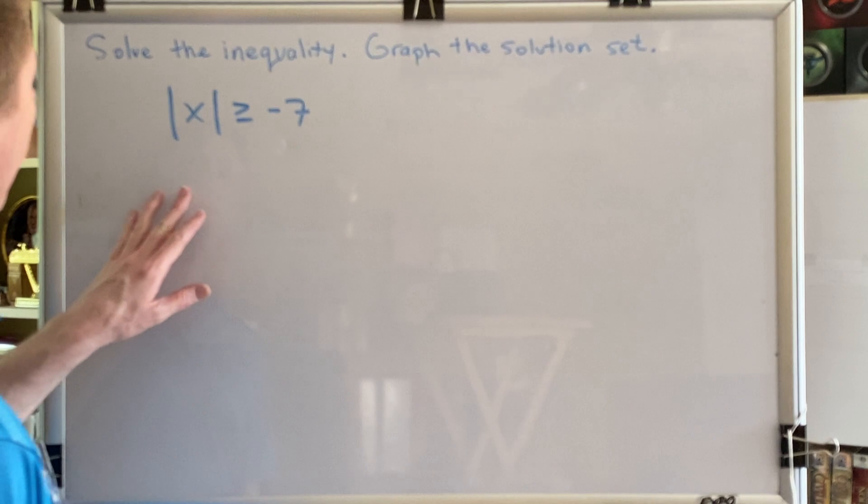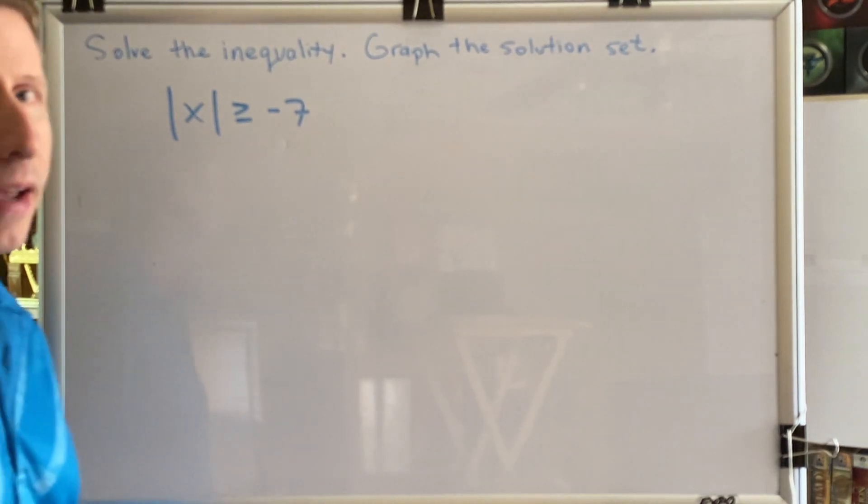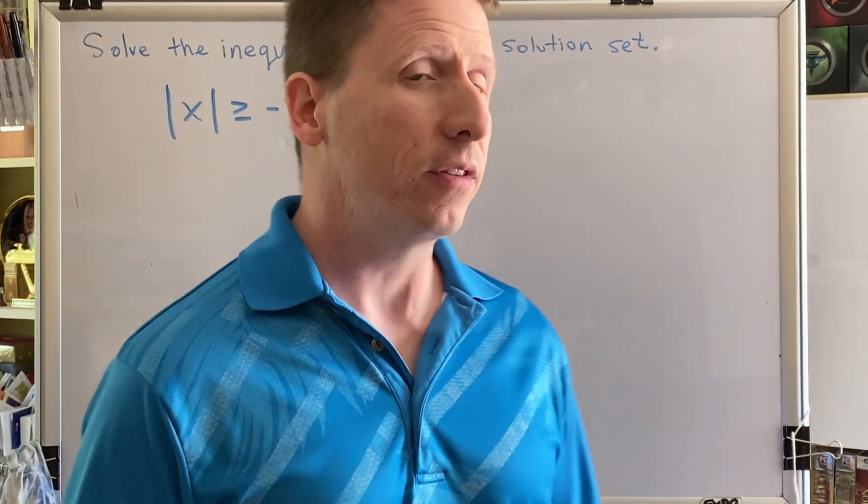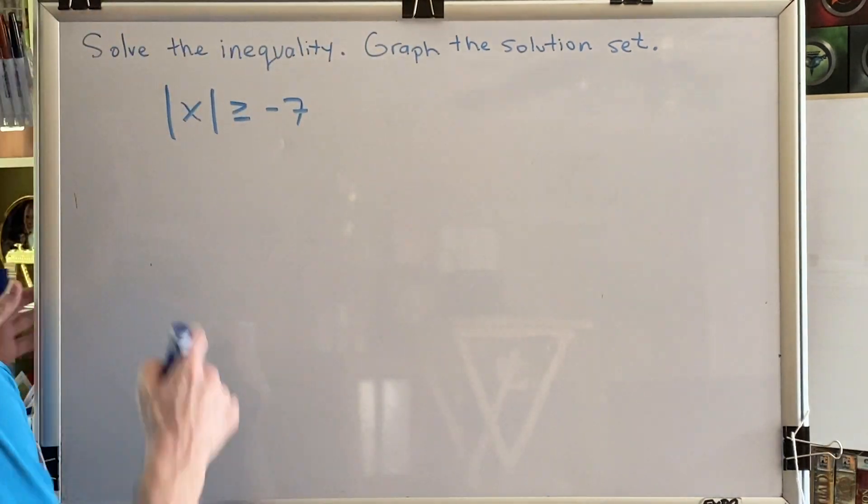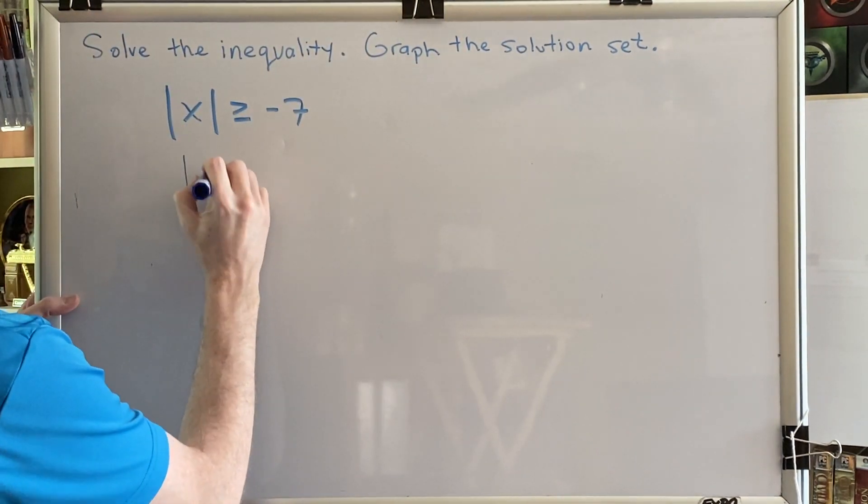The absolute value of x is greater than or equal to negative 7. We see that we have a variable inside of our absolute value bars, so the entire expression will be replaced with star.